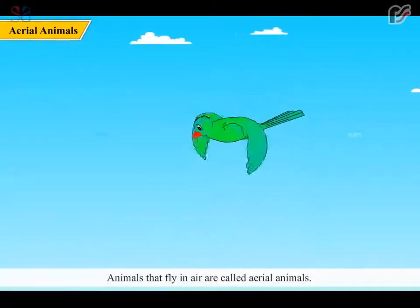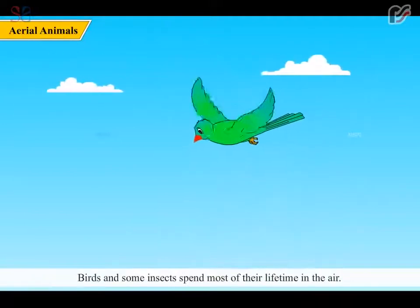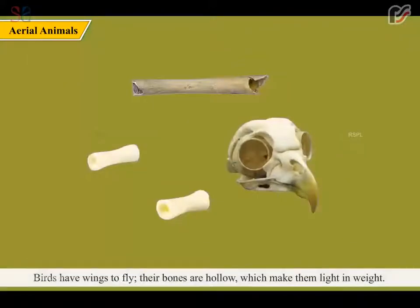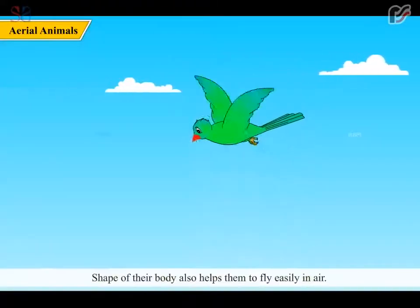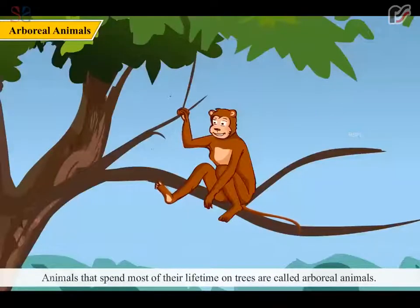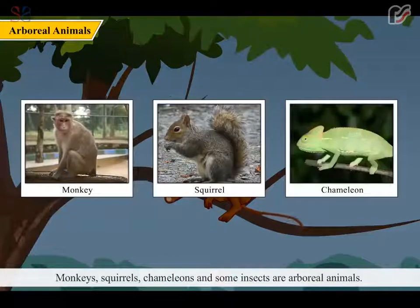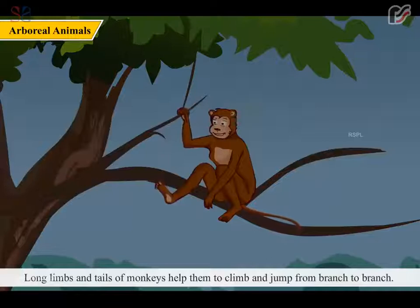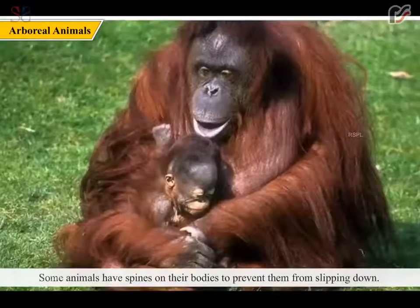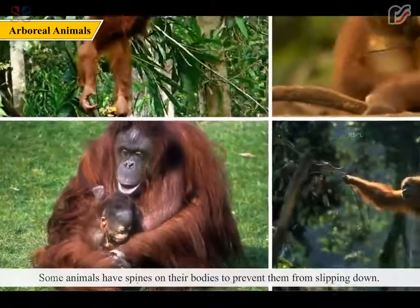Animals that fly in air are called aerial animals. Birds and some insects spend most of their lifetime in the air. Birds have wings to fly, their bones are hollow which makes them light in weight, and the shape of their body also helps them to fly easily. Animals that spend most of their lifetime on trees are called arboreal animals. Monkeys, squirrels, chameleons and some insects are arboreal animals. Long limbs and tails of monkeys help them to climb and jump from branch to branch. Four limbs of a squirrel help it to hold food and put it into the mouth. Some animals have spines on their bodies to prevent them from slipping down.